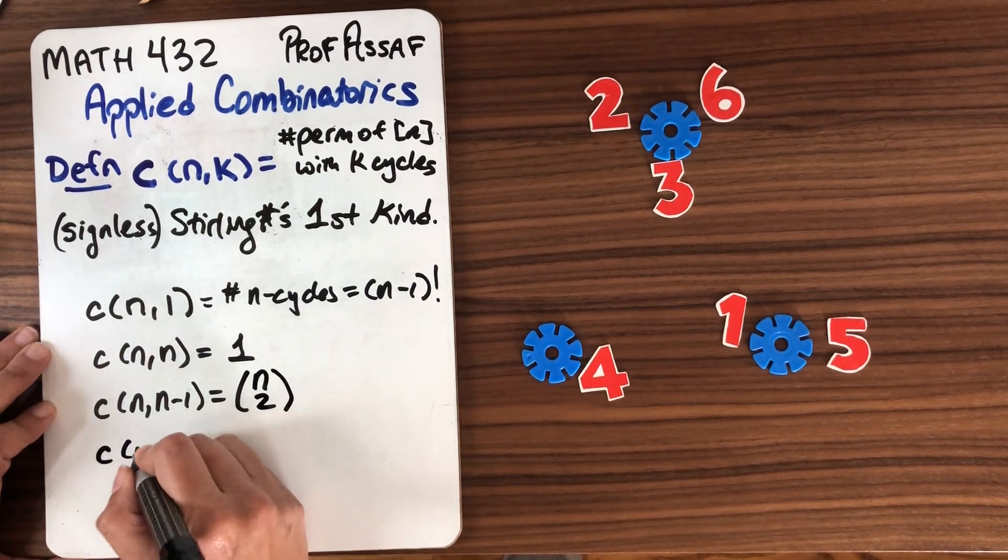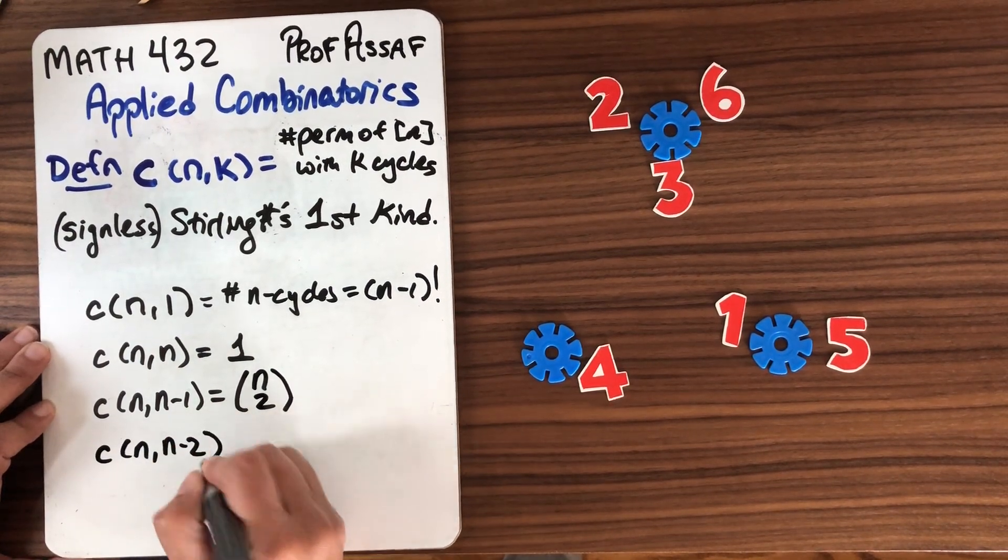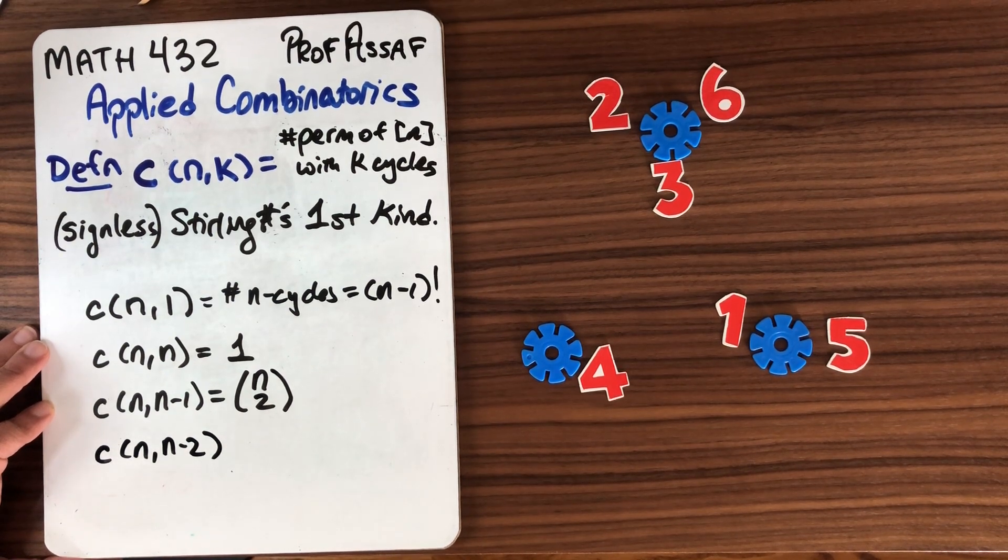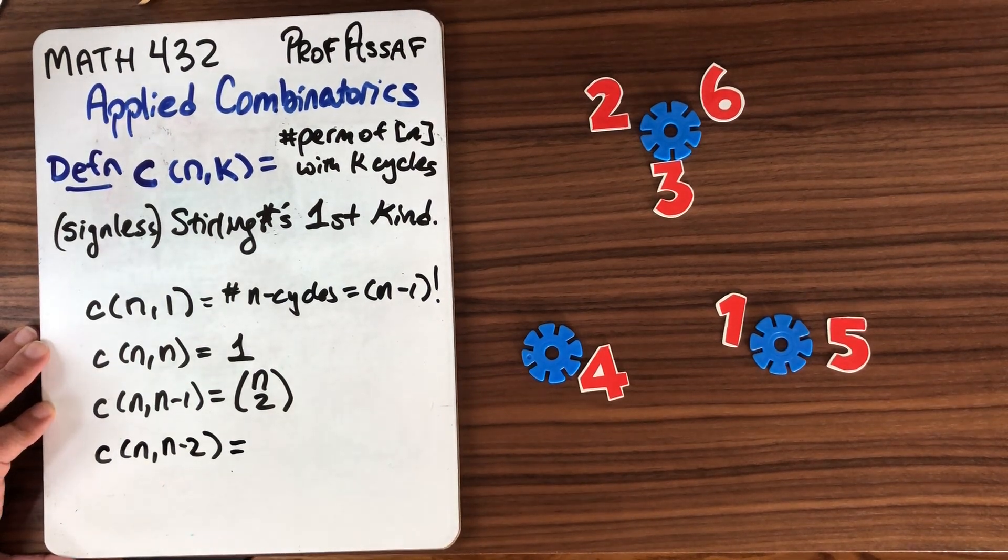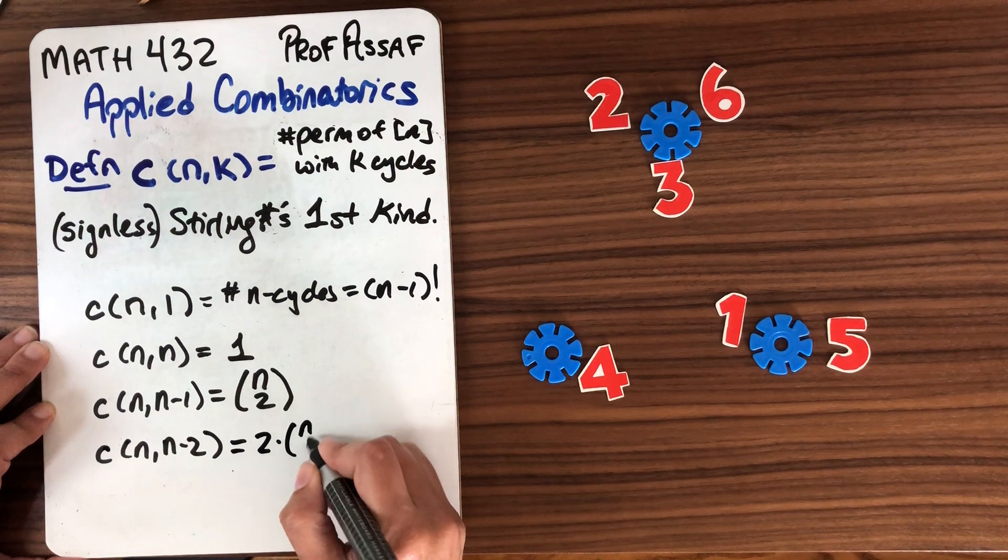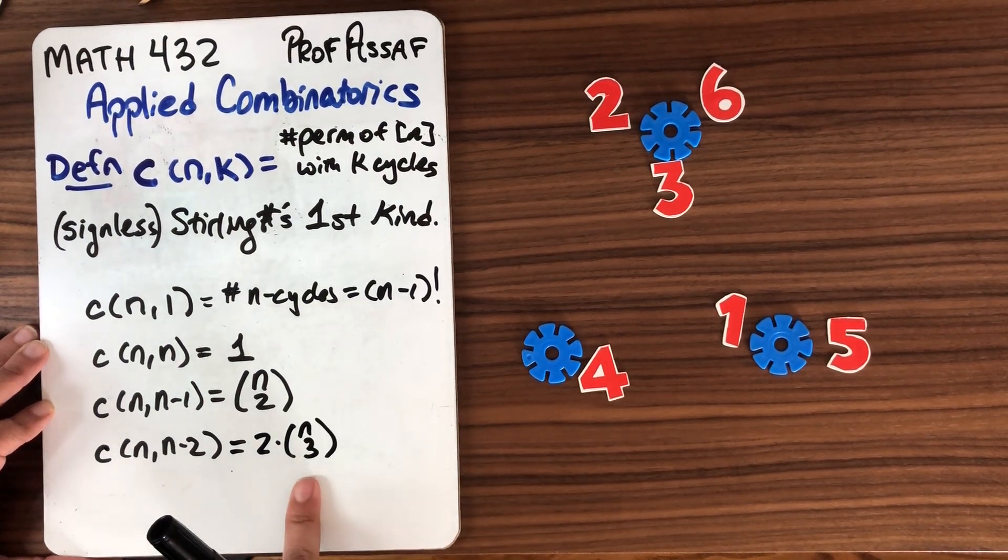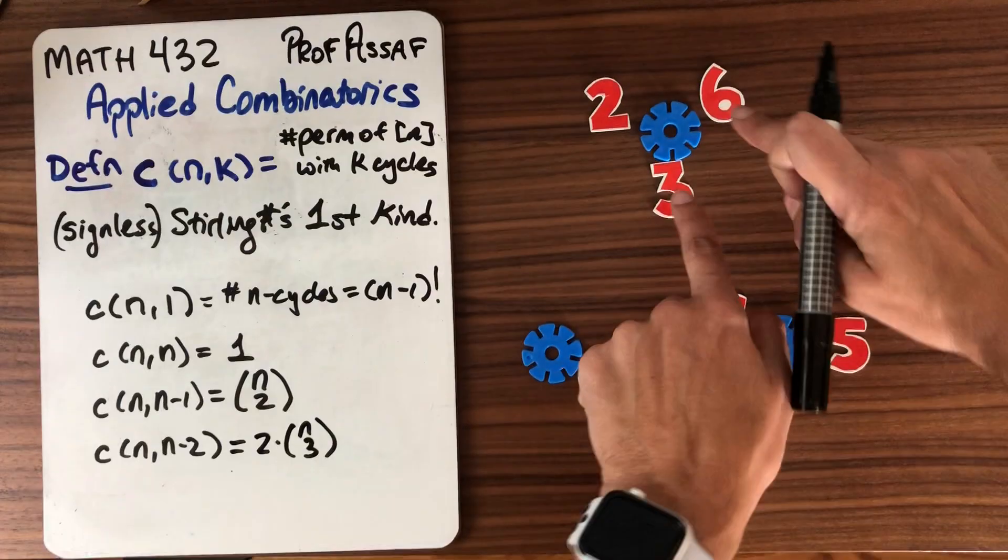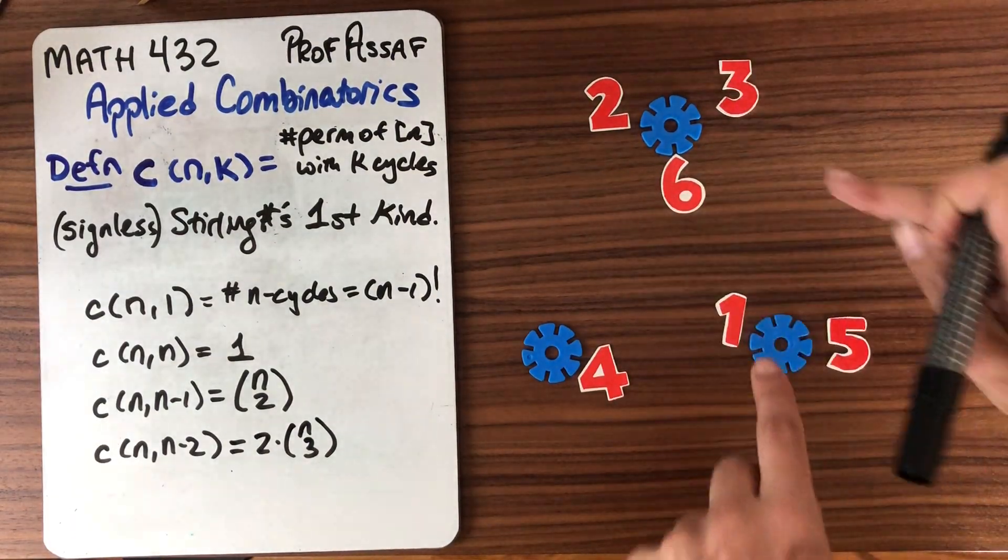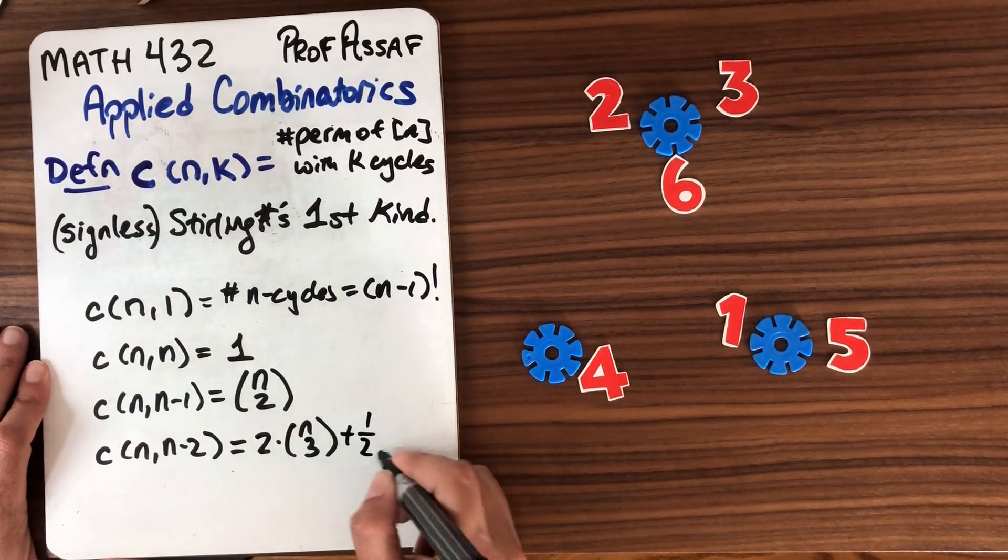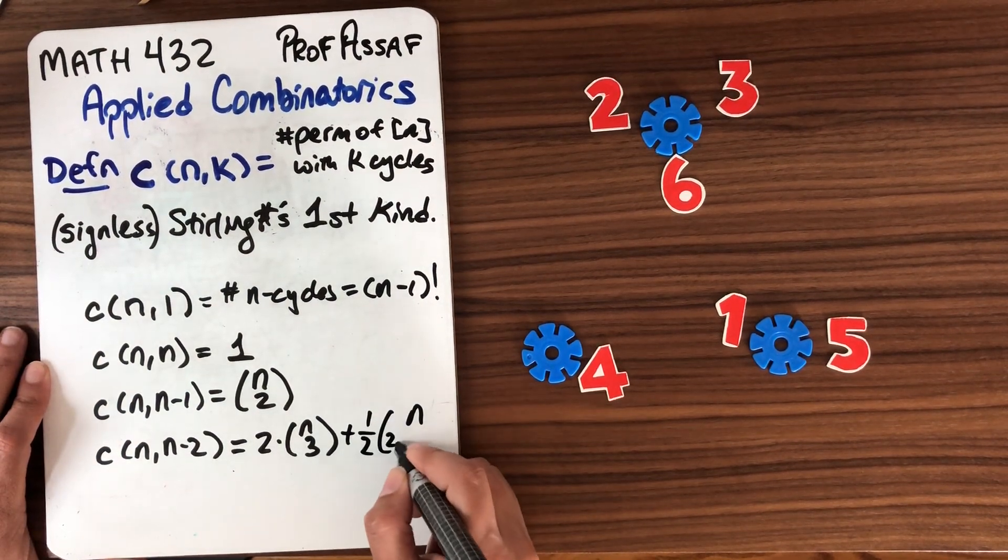What about c(n,n-2)? There is a formula for this one as well. It's similar to the way that we did the previous one and I'll give you the formula in this case. It's going to be 2 times n choose 3, because n choose 3 chooses a three cycle and then there are two ways that you can orient that three cycle.